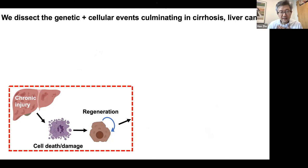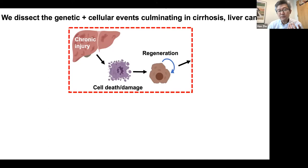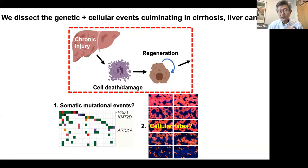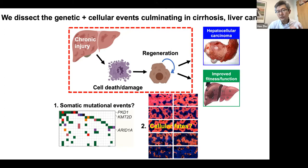We like to probe the genetics, and in particular some of the somatic mutational events that occur, along with other genetic pathways we would like to discover. We also look at the heterogeneity of cell biology within the liver. With these two variables in hand, we want to ask how altering or perturbing them might prevent or promote hepatocellular carcinoma, and how they might increase or decrease liver function during chronic damage.